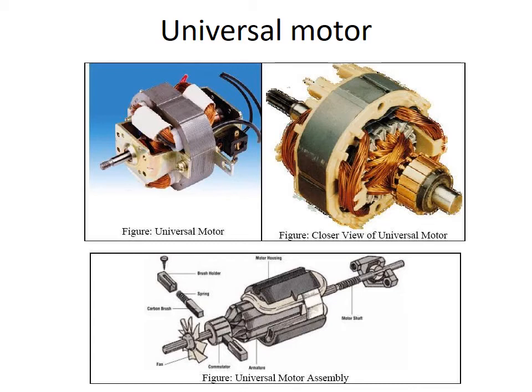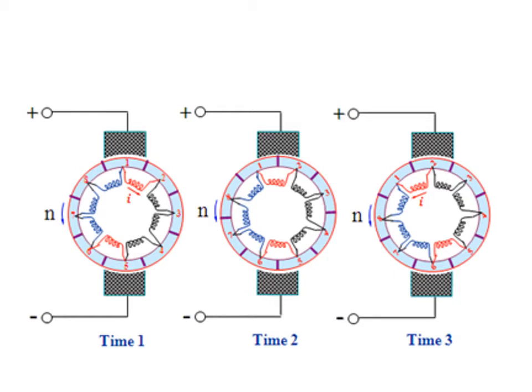Here we have a close view of the universal motor assembly, which includes the brush, spring, brush holder, fan, commutator, armature, motor winding, motor shaft, and bearings — all visible. The operation is simple: we provide supply to the series field winding and armature, which produces magnetic flux in both windings. When the two fluxes interact, they experience a force that produces torque. If you provide DC supply, the motor works as a DC series motor; if you provide AC supply, it works as an AC series motor — both run at the same torque.